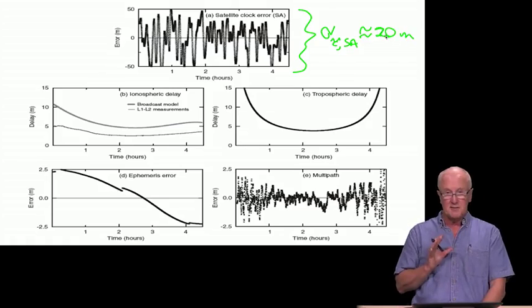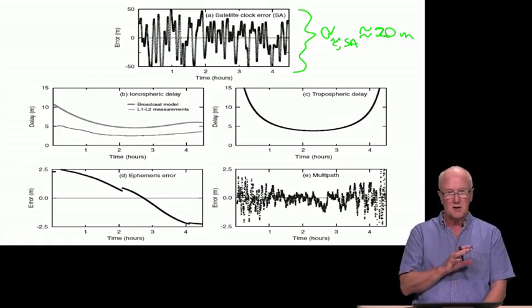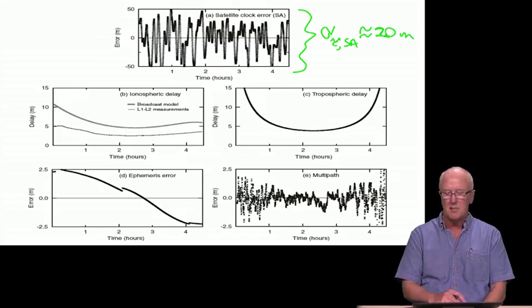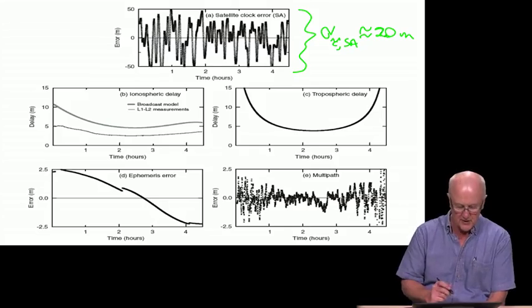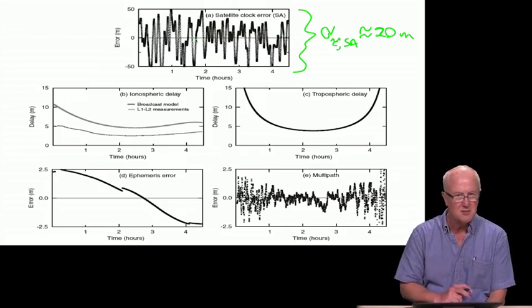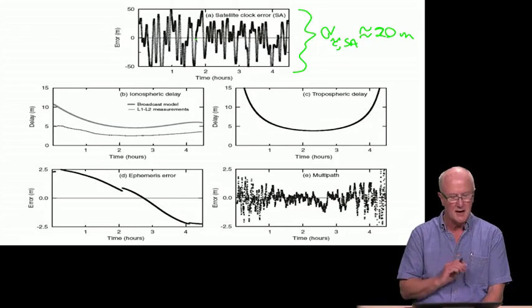The standard deviation associated with something like this is probably close to approximately 20 meters or so. In the scheme of things for GPS, that was a large error. That error was introduced intentionally for defense reasons. And some years ago, it was turned off. And the current satellites that are being launched don't even have the capability to turn it back on. So this error is now replaced by a much smaller error for the satellite clock.